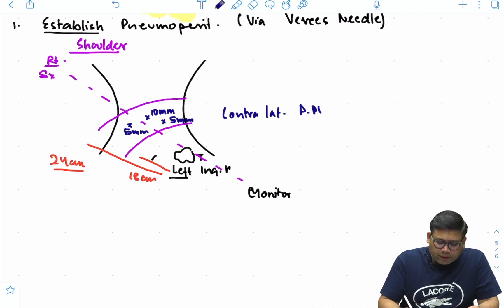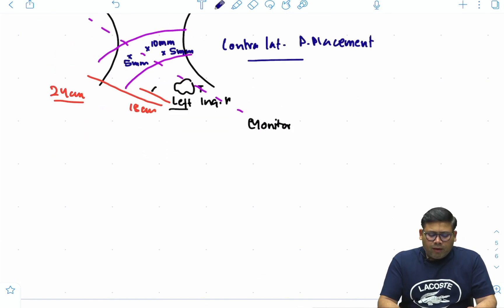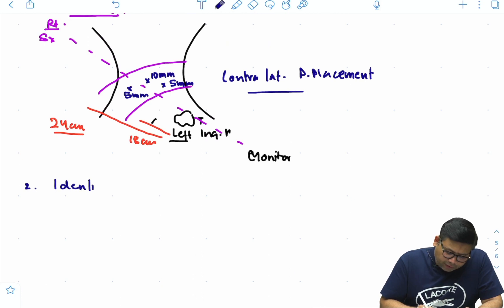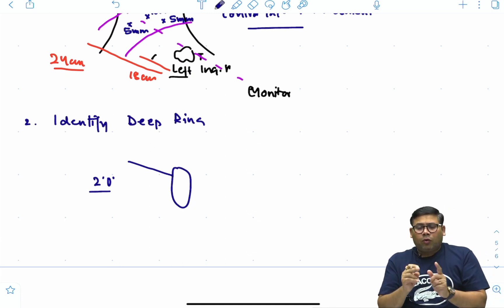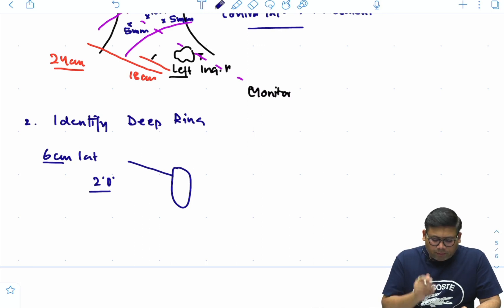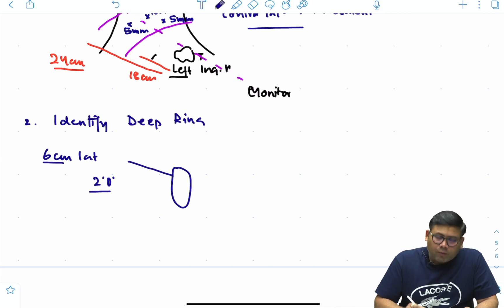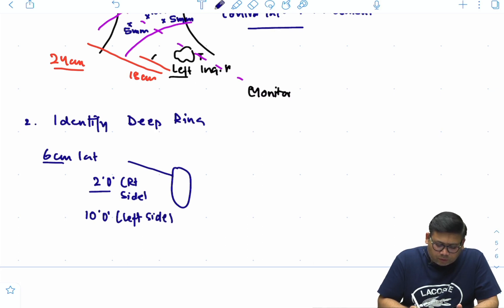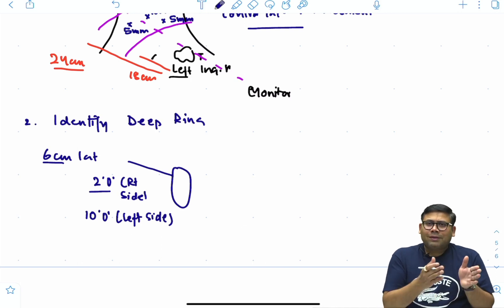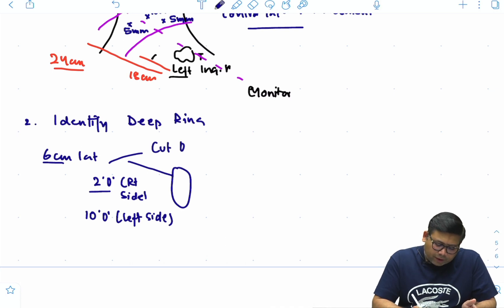Contralateral port placement is very important. Step two: identify the deep ring. At two o'clock position for the right side and ten o'clock position for the left side, go six centimeters lateral to the deep ring and cut open the peritoneum. I'm performing a left-sided hernia repair, so I go six centimeters above at ten o'clock and cut open the peritoneum.